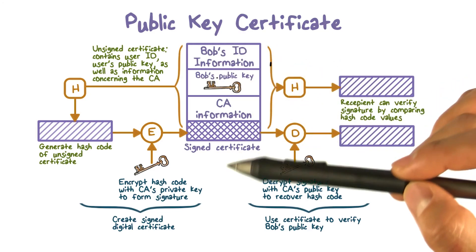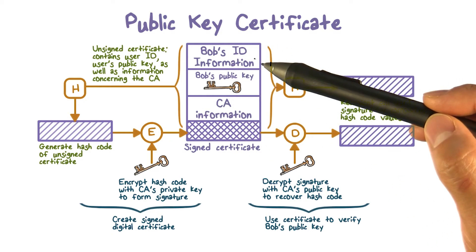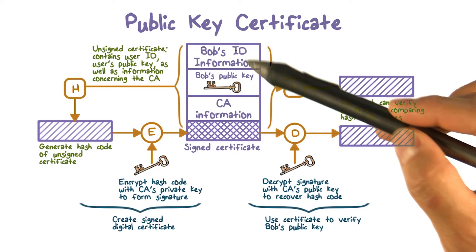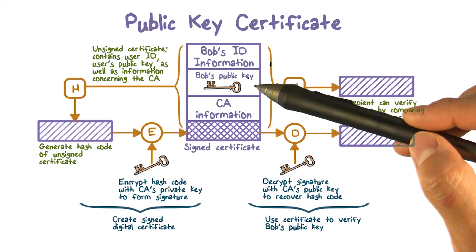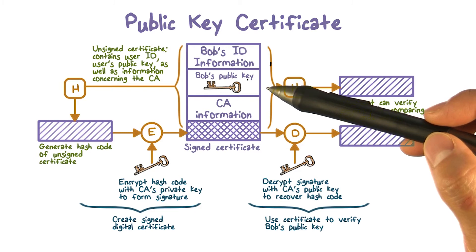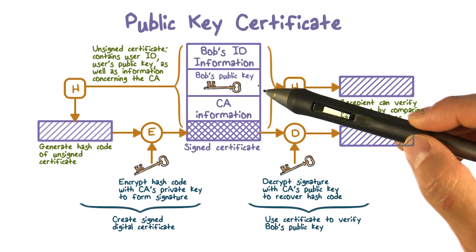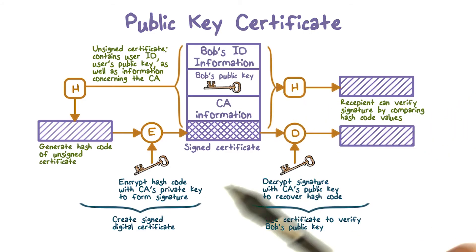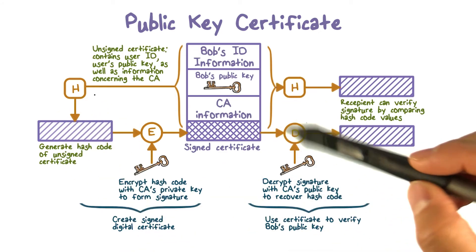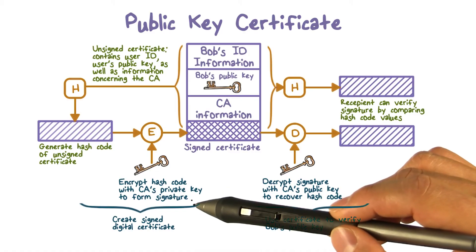Suppose Bob wants the certificate authority CA to create a certificate for his public key. Bob would contact the CA and provide authentication information, such as his driver's license, and then he would send his public key to the CA. The CA will then take Bob's ID, his public key, and other information such as the period of validity together, and then hash it. Then the CA will use its private key to sign the hash.